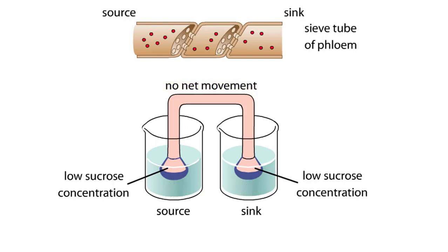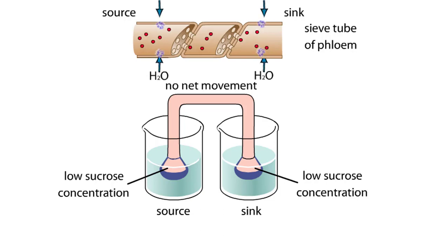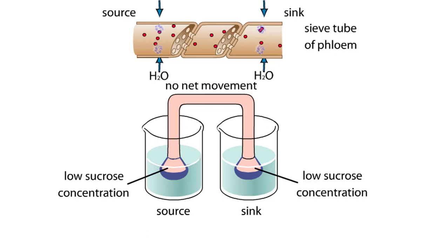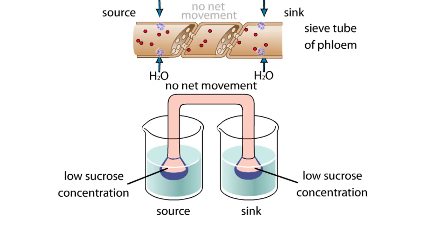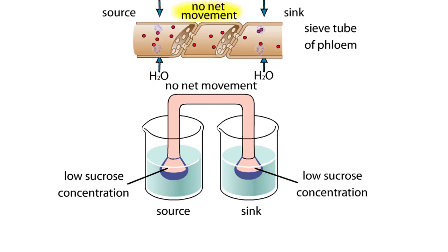Similarly, in a phloem sieve tube that contains equally low concentrations of sucrose along its length, a small amount of water enters the phloem by osmosis. However, the water enters equally along the length of the sieve tube, so there is no net movement of sucrose.